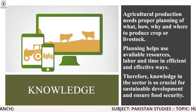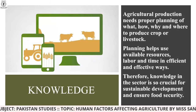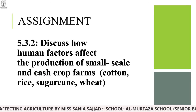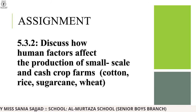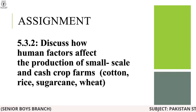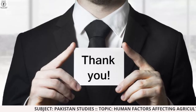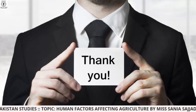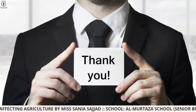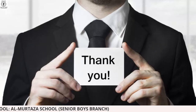Finally, knowledge: you should have balanced knowledge about agriculture, cash crop farming, and subsistence farming — without knowledge, production will be affected. The assignment for today is: discuss how human factors affect the production of small scale and cash crop farms — cotton, rice, sugarcane, and wheat. Thank you so much everyone, I hope this presentation was informative and cleared up any misconceptions. You can ask questions on KP or my YouTube channel. Take care!